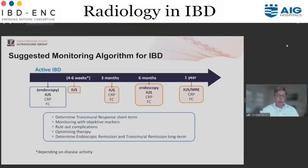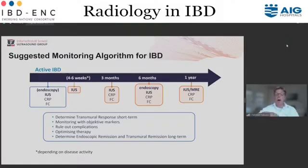A practical monitoring algorithm: at active IBD, perform intestinal ultrasound, CRP, and fecal calprotectin — endoscopy only if it adds necessary information. Start therapy; if a severe flare, look at four to six weeks; after three months perform intestinal ultrasound follow-up; after six months follow up again, potentially adding endoscopy; and then at one year. The goal is to determine transmural response short-term, monitor with objective markers, rule out complications, optimize therapy, and determine endoscopic and transmural remission long-term.